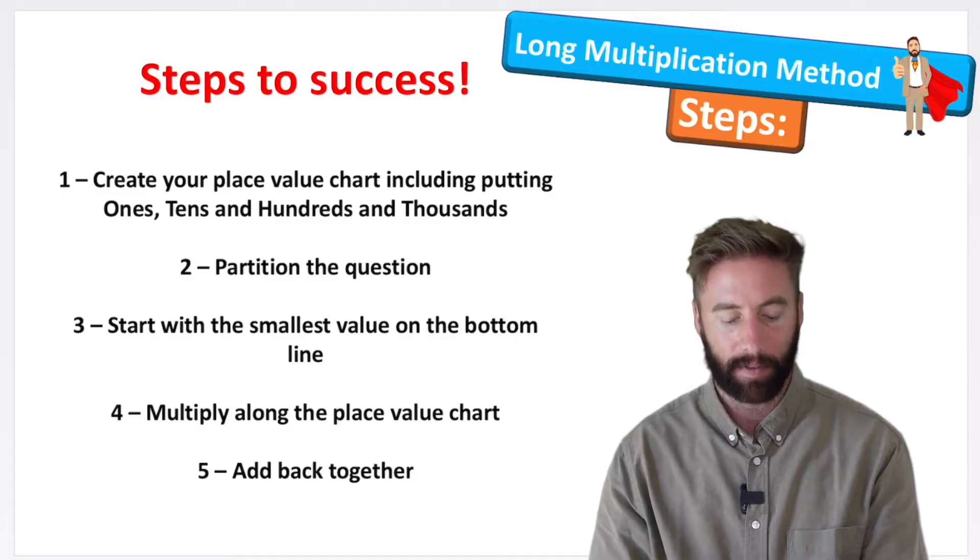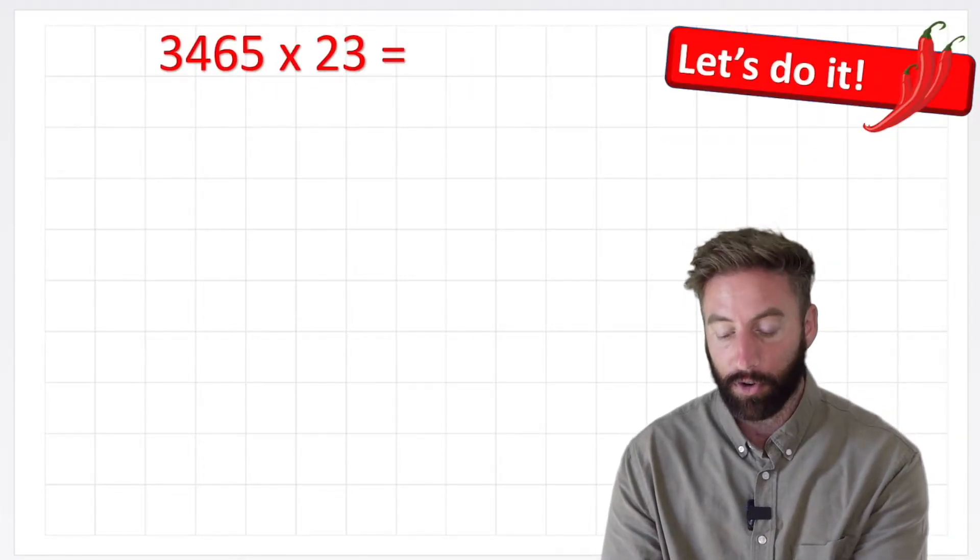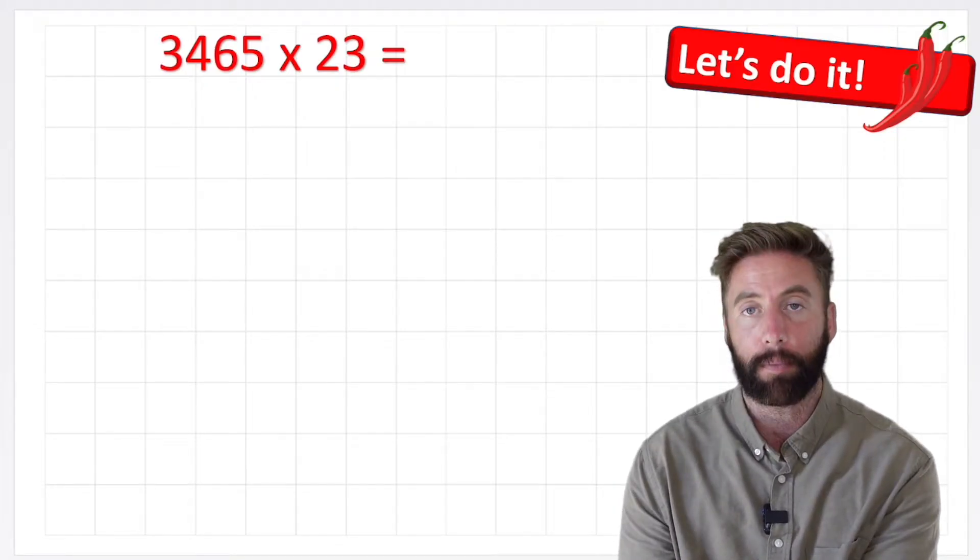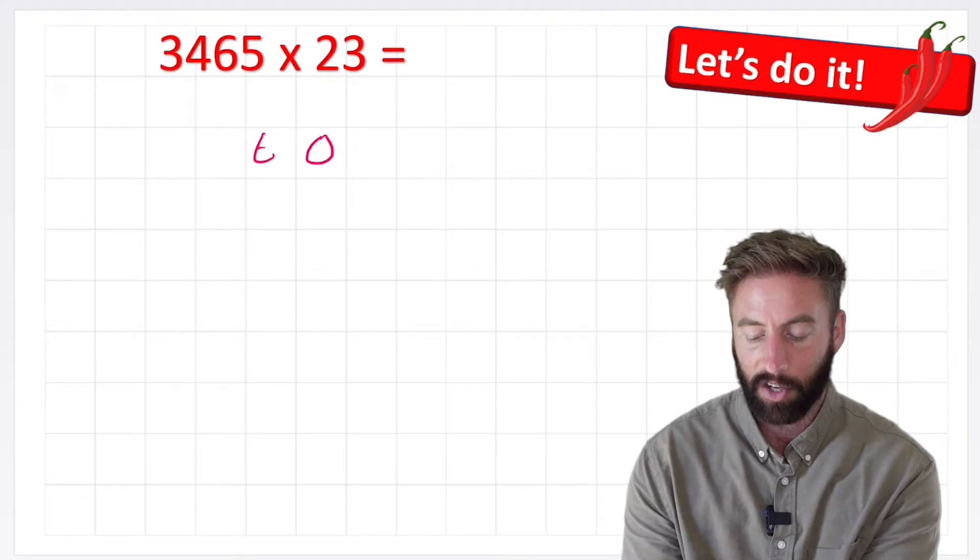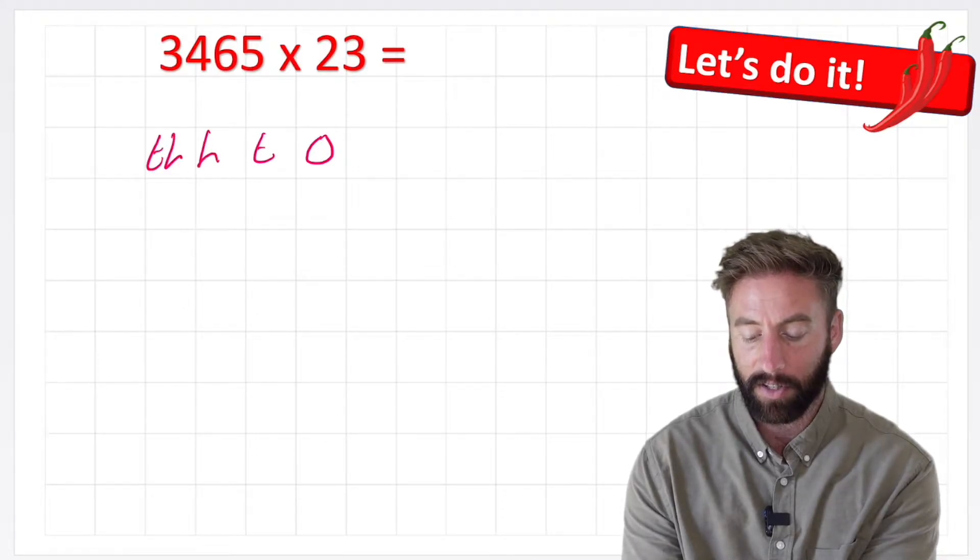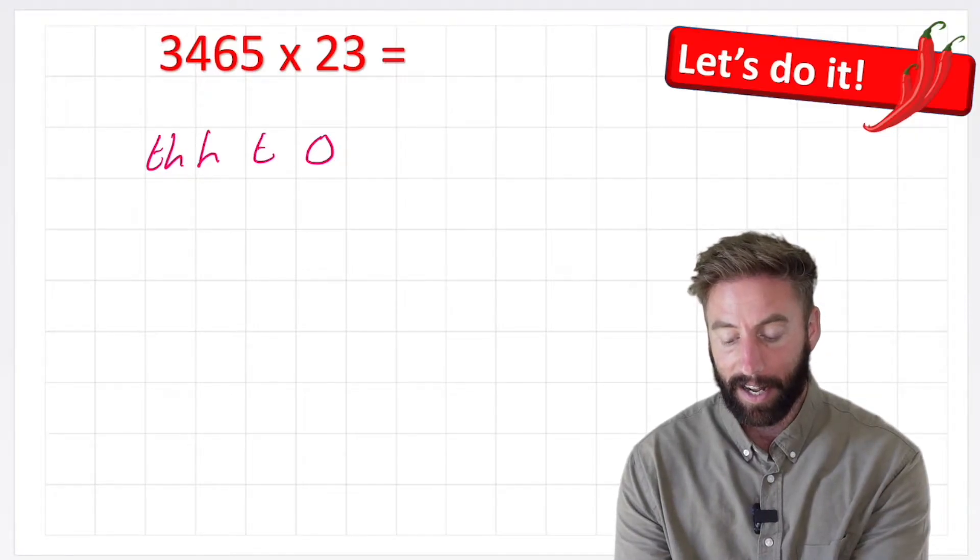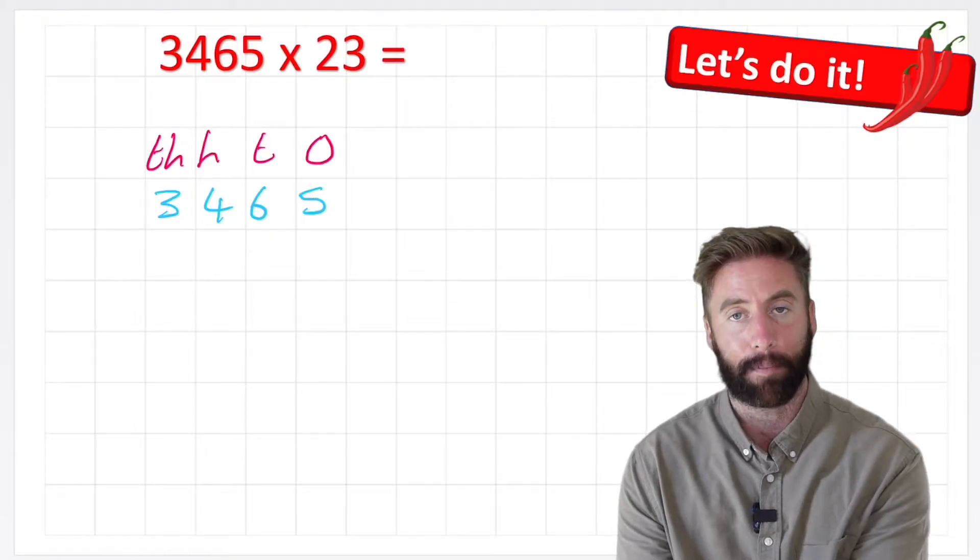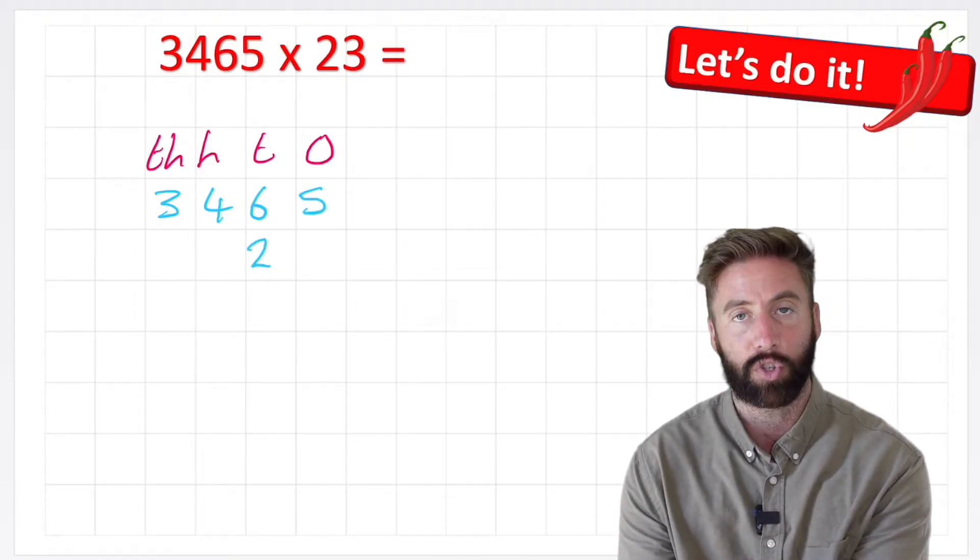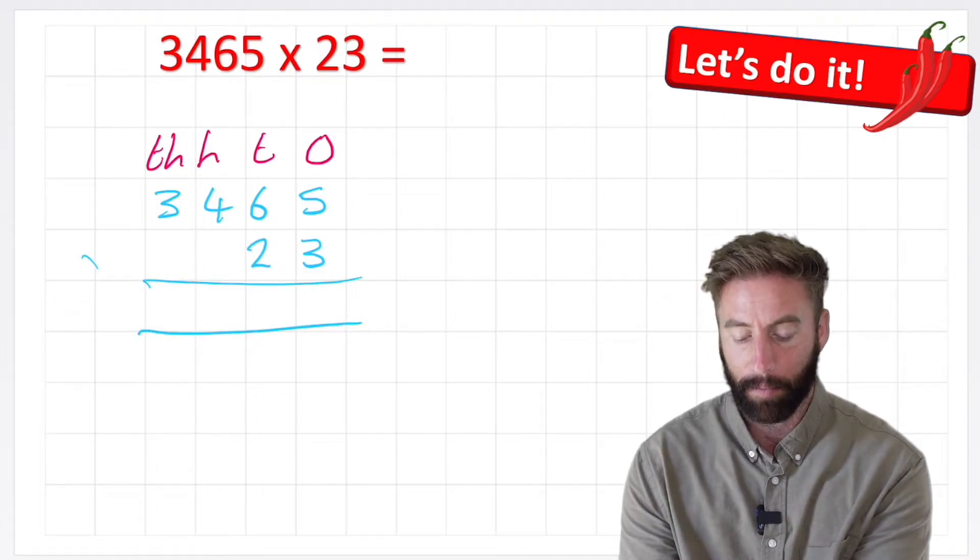So let's think about how to set this question out. We have 3465 times 23, so I'm going to need to put my place value labels on the top, so I'm going to have ones, tens, hundreds, and thousands. And then I can start to put my numbers in place. I can put 3465 and then my 23. I can see I've got two tens and three ones. Put my equals line, my multiplication sign, and I'm ready to begin.